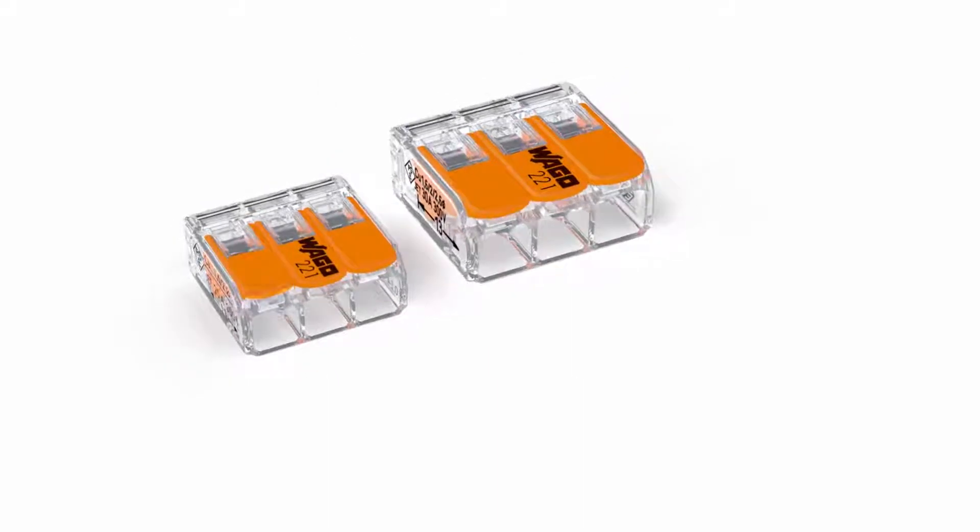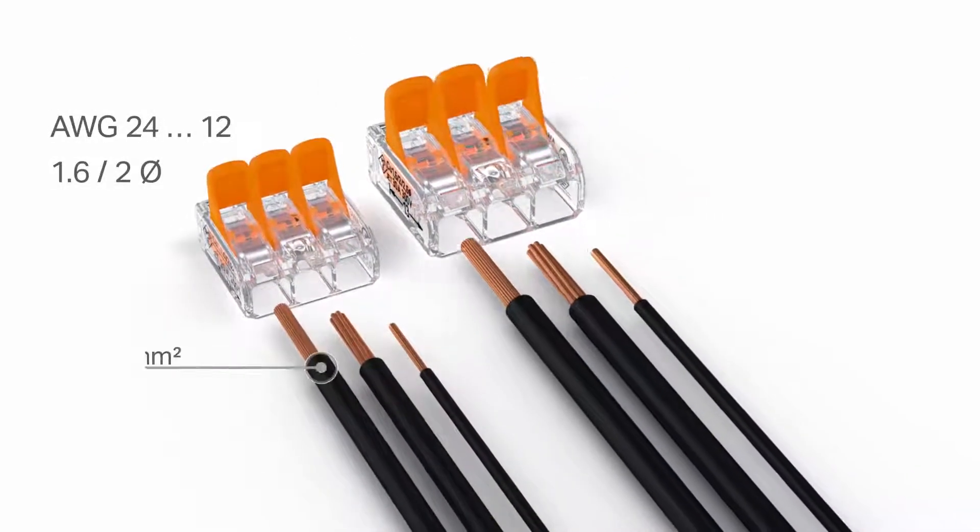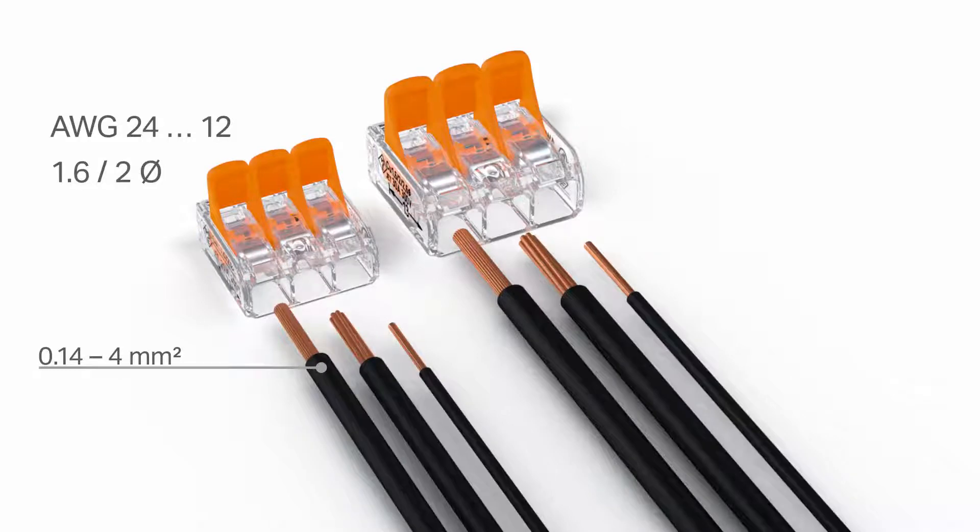The 4 square millimetre 32 amp version accommodates fine stranded conductors from 0.14 to 4 square millimetres as well as solid and stranded conductors from 0.2 to 4 square millimetres.